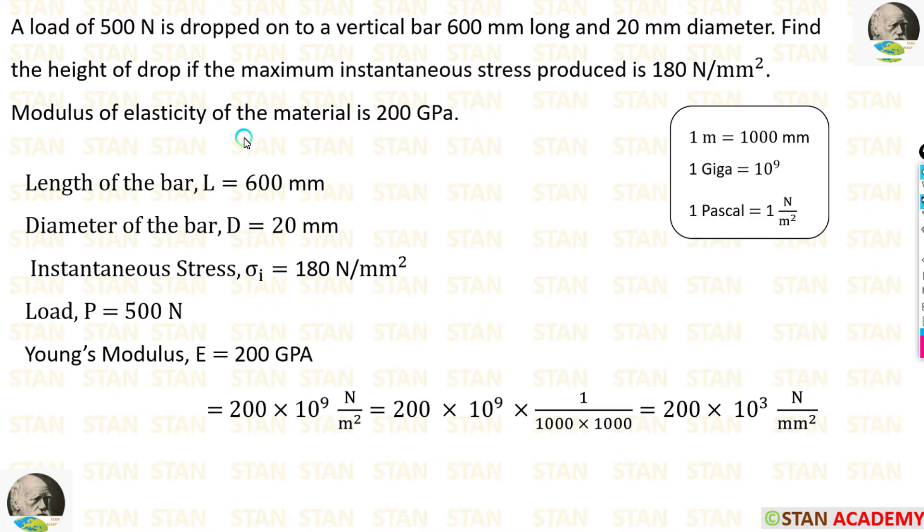Using the details given in the question, we can make the given data. Length of the bar L is equal to 600 mm. Diameter of the bar D is equal to 20 mm. Instantaneous stress sigma i is equal to 180 Newton per mm square. Load is equal to 500 Newton. Young's modulus is equal to 200 GPa.